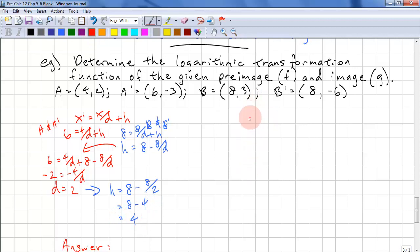Let's work with y's. We have y' equals cy plus k. With a and a prime, we have negative 3 equals c times 2 plus k. And for b and b prime, we have negative 6 equals c times 3 plus k. Let's solve for k. We have k equals negative 6 minus 3c.